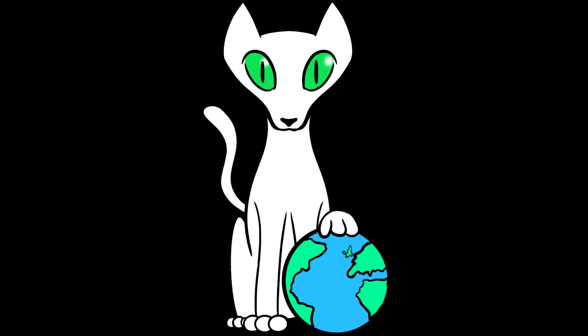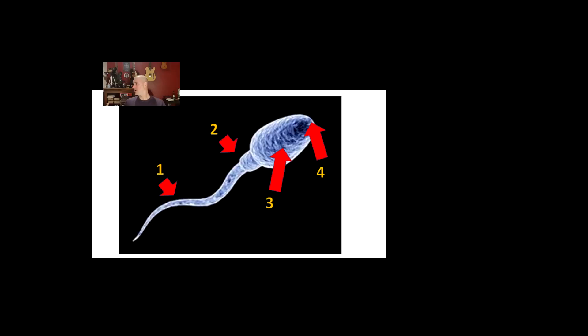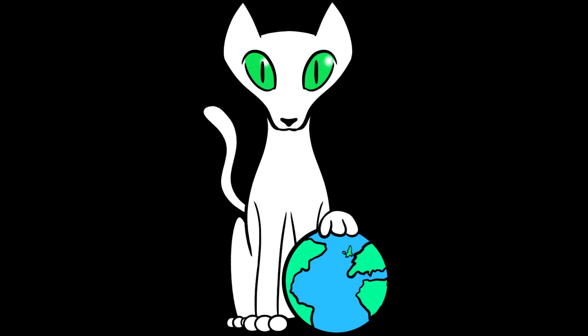So what's the function? To swim to and fertilize the egg. And there are four parts of the sperm cell that allow it to carry out that function, so let's take a quick look.